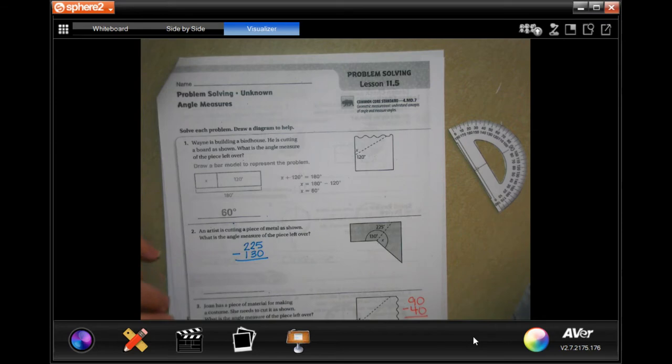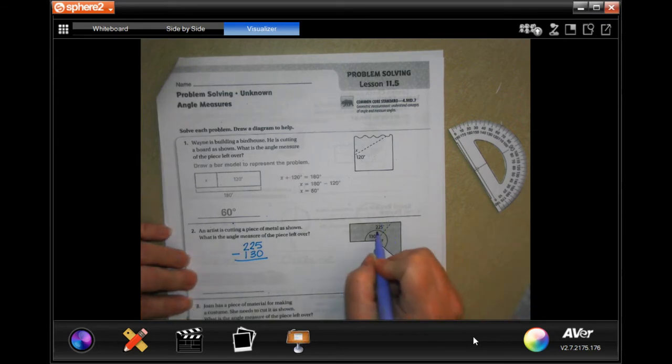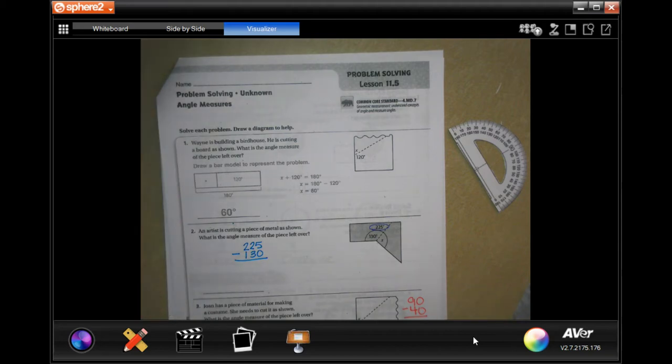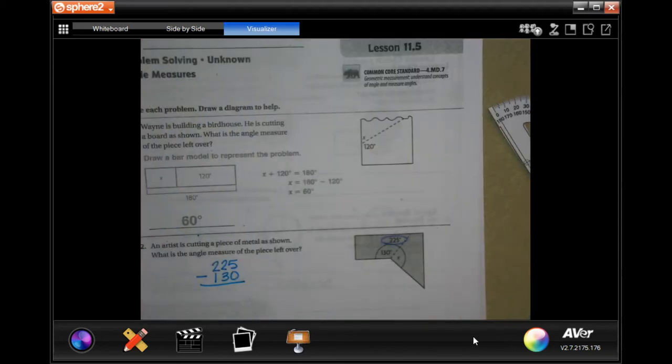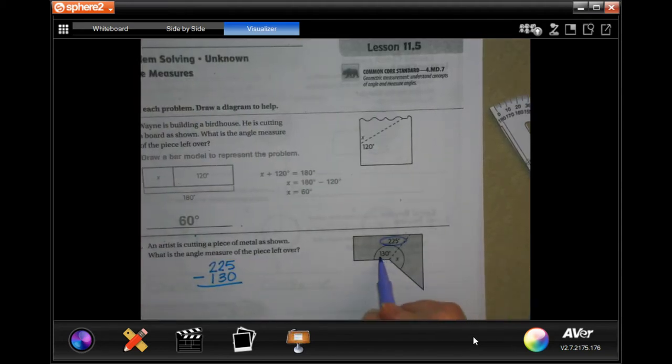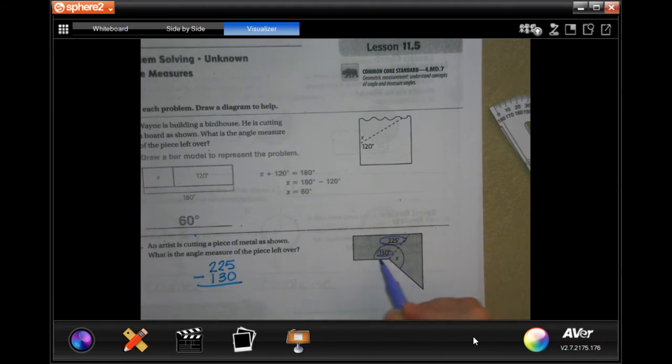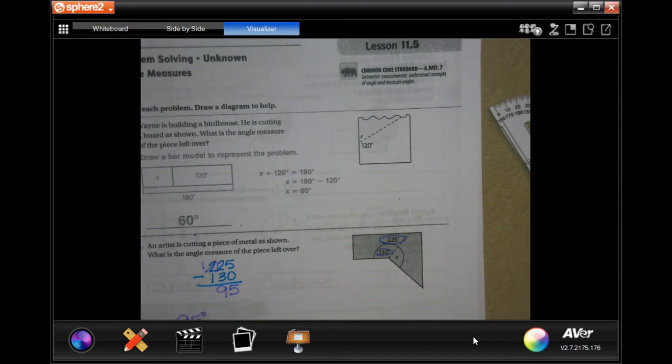We're going to go ahead and get started with number 2. So, it's actually telling you how much that is total, and then I'm going to zoom in just a little bit so y'all can see better. Okay, and then it's telling you how much is already there. So, all you have to do is subtract. So, 5 minus 0 is 5. 2 can't take away 3, so now I'm going to make it 12. 12 minus 3 is 9. 95 degrees.